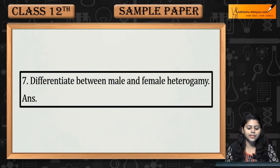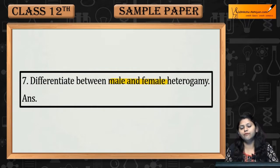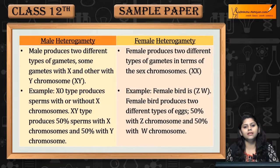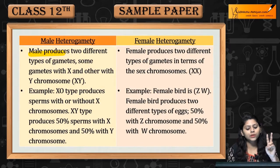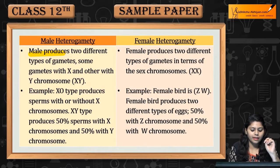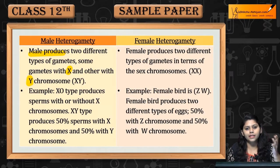Question No. 7: Differentiate between male and female heterogamety. First, male heterogamety — males produce two different types of gametes, X or Y, in the case of human beings.